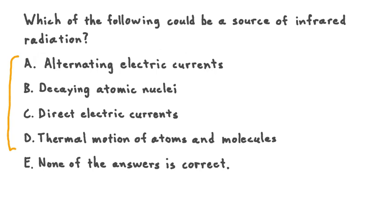We see that each one of the options A through D is a candidate for being a source of infrared radiation, a particular type of radiation in the electromagnetic spectrum. As we consider which of these four options could be a source of IR, infrared radiation, let's start out at the top with option A, alternating electric currents.